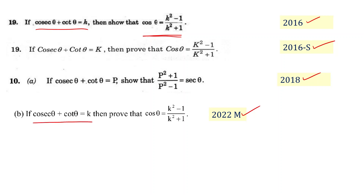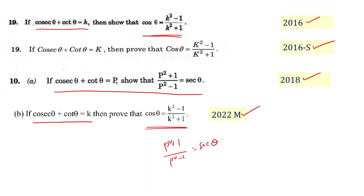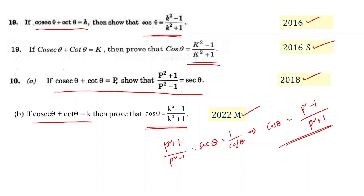Given cosec theta plus cot theta equals k, we need to prove cos theta equals k squared minus 1 divided by k squared plus 1. I chose this particular problem because a similar variant uses p instead of k, where p squared plus 1 divided by p squared minus 1 equals sec theta, which is 1 by cos theta. So cos theta equals p squared minus 1 divided by p squared plus 1. Now let's learn how to solve this.